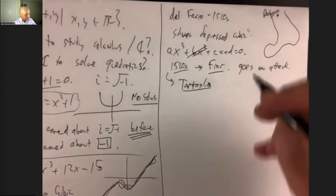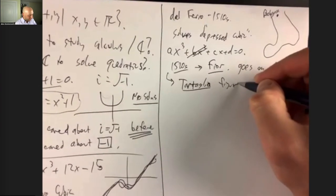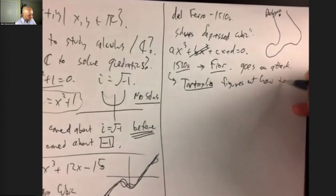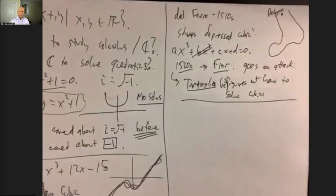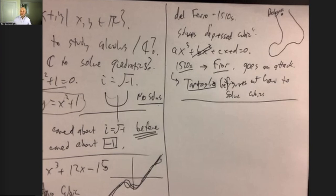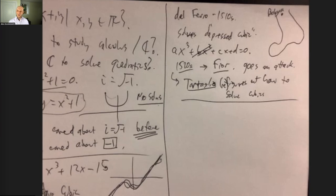So Tartaglia, on his own, rediscovers how to solve cubics. He shows up the next day: 'Fior, here are solutions to all 20 depressed cubics.' Fior is humiliated and never heard from again. But all these things are taking place publicly — that's the whole point of these duels. So people know that Tartaglia was given 20 cubics and solved them all, meaning a solution exists.